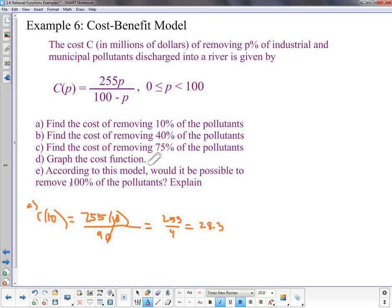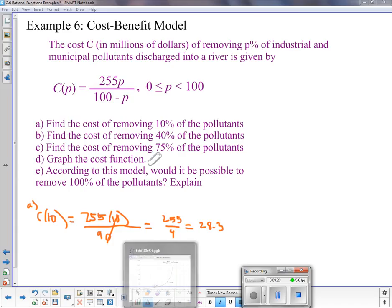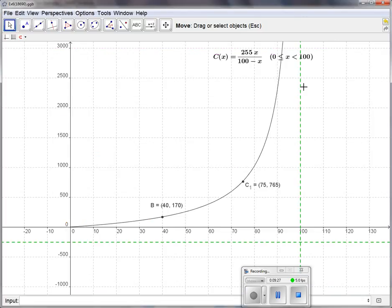according to this model, would it be possible to remove 100% of the pollutants? So I can look at the graph. And the graph of this shows I'm never going to get to 100%. Number one, 100% is not in the domain. But even if it were,